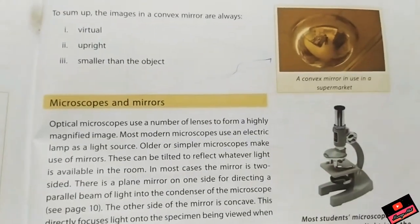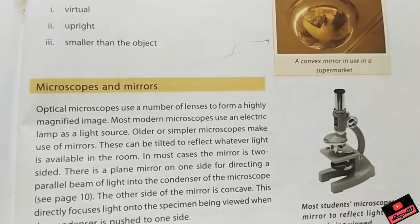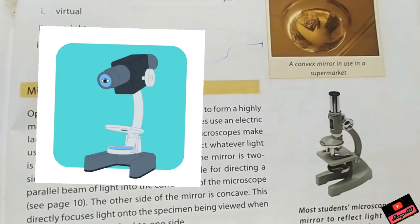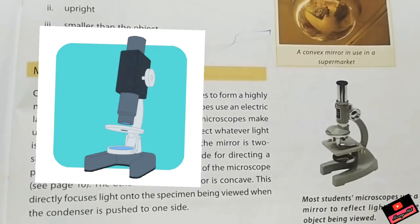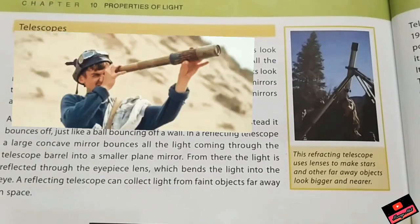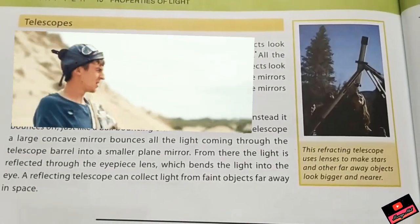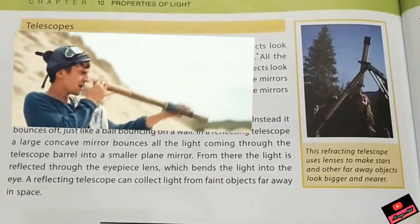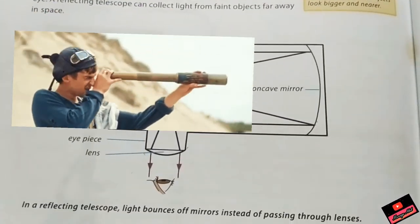We have studied that there is a microscope. Microscope also uses mirrors and we can see small objects through microscopes. Here we have studied telescopes as well. We can see distant objects easily by telescopes. They are also using lenses.